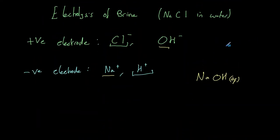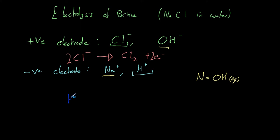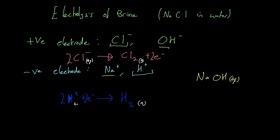For the half equations: at the positive electrode we form chlorine from chloride — 2Cl⁻(aq) → Cl₂(g) + 2e⁻. At the negative electrode, H+ from water forms hydrogen gas — 2H⁺(aq) + 2e⁻ → H₂(g). The ions are aqueous and both chlorine and hydrogen are gases.